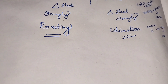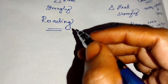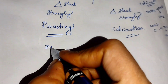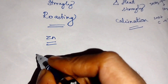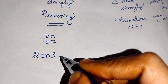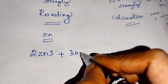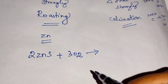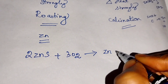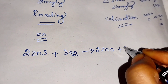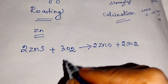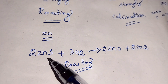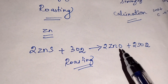Now we are going to see the derivation for roasting and calcination. From the middle of the activity series I am taking zinc. Zinc is in the form of zinc sulfide. I heat this zinc sulfide in the presence of air, so oxygen is present and reacts with zinc sulfide. What happens is the sulfide is converted into its oxide - zinc oxide is formed, plus sulfur dioxide is also formed. This process is known as roasting.